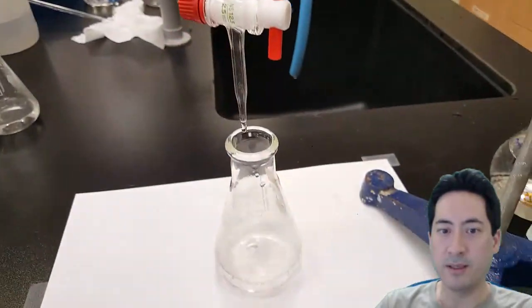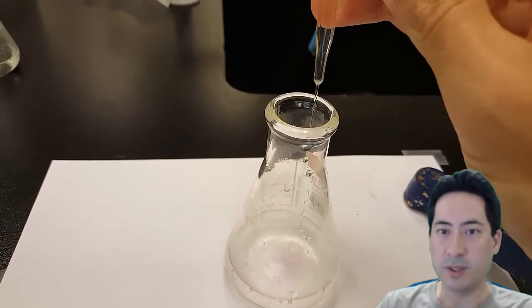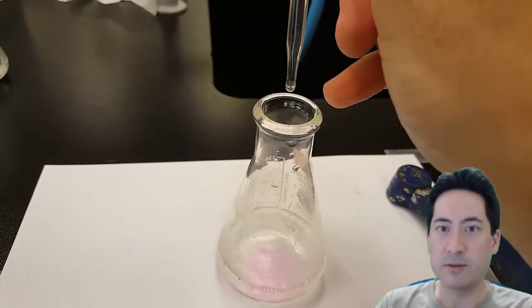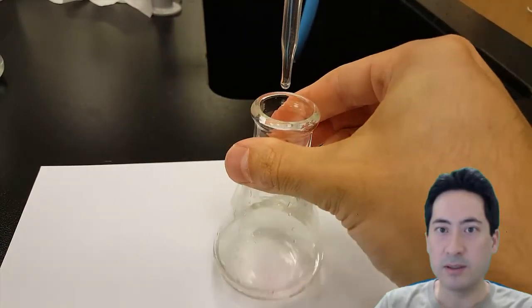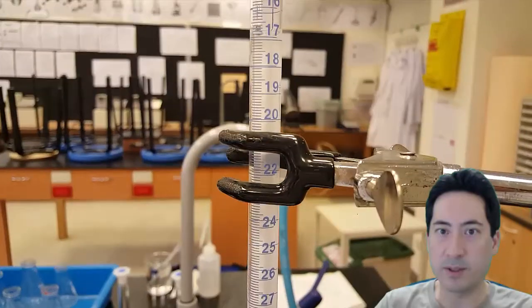And so you can see here that the liquid is falling out really quickly. And as soon as it goes pink, I'll stop it and that'll give me a rough idea of what the answer is. And there you can see it's falling down quite quickly. It's going like one mil every three seconds.